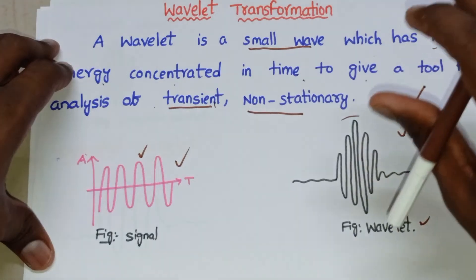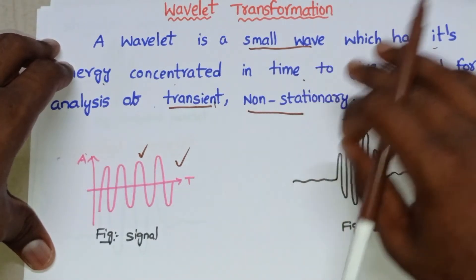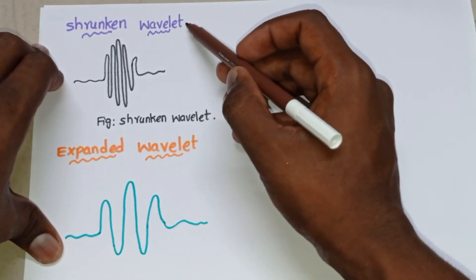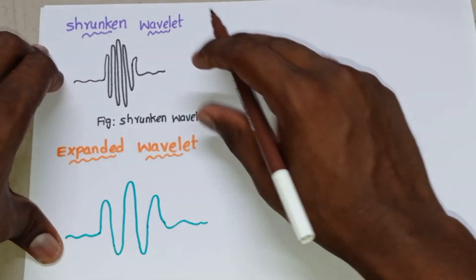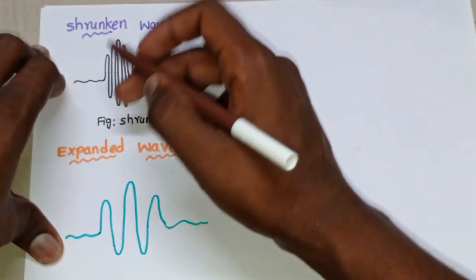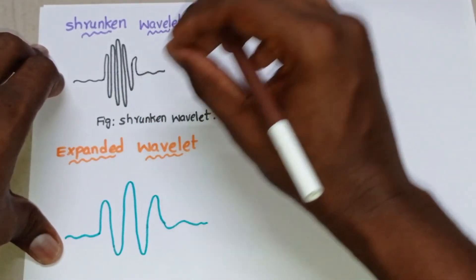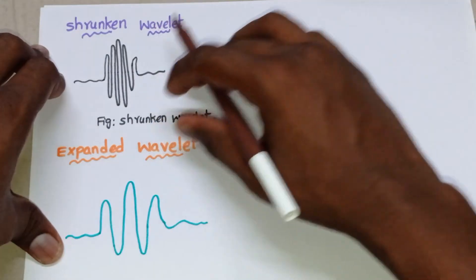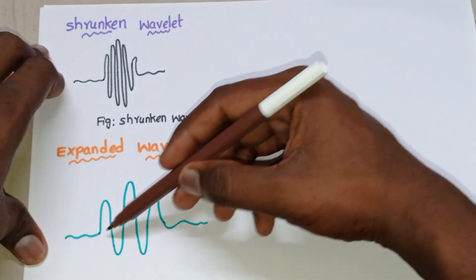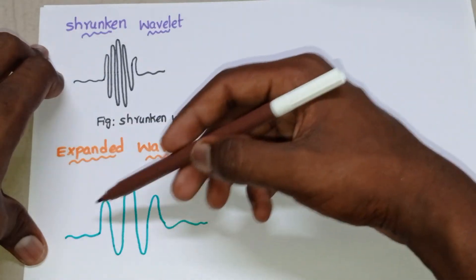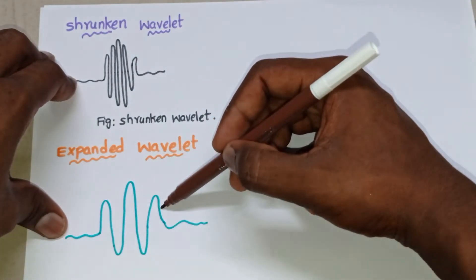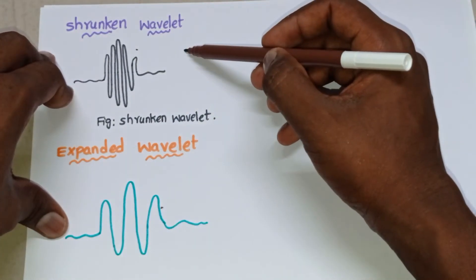There are mainly two types of wavelets: one is the shrunken wavelet and the other is the expanded wavelet. The shrunken wavelet has high frequency — the distance between two cycles is very small, meaning cycles are very close to each other. The expanded wavelet has cycles that are farther apart from each other, and here the frequency is very low.